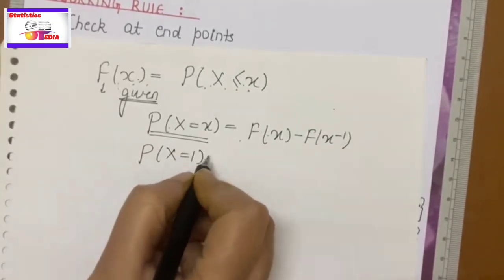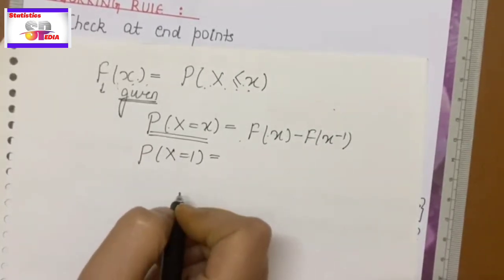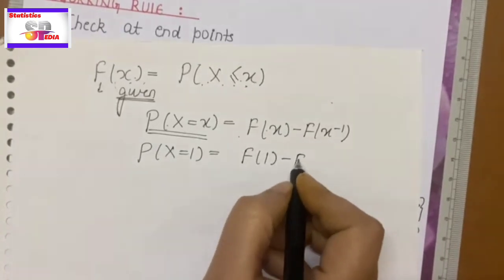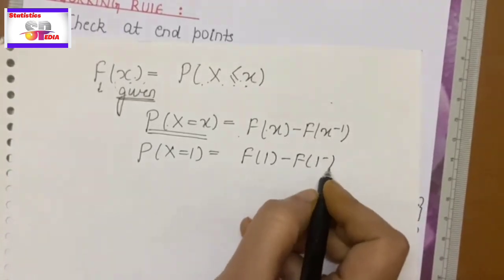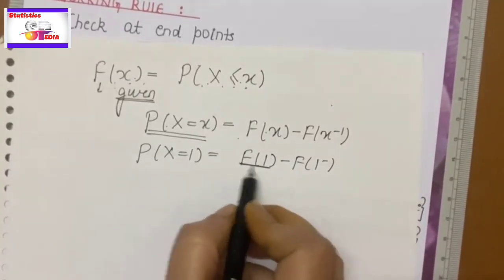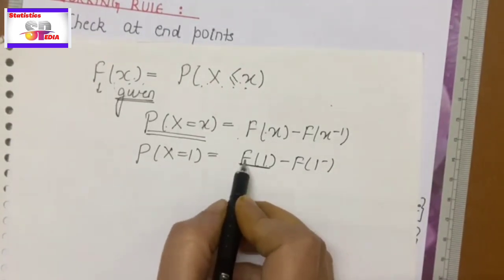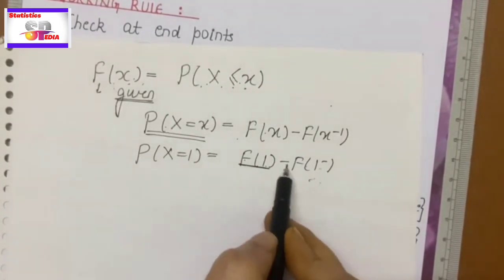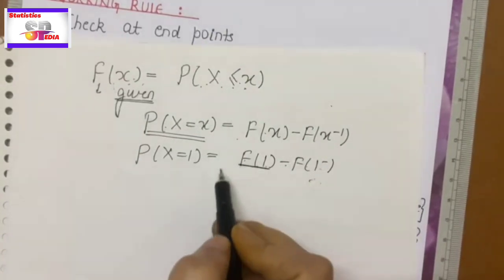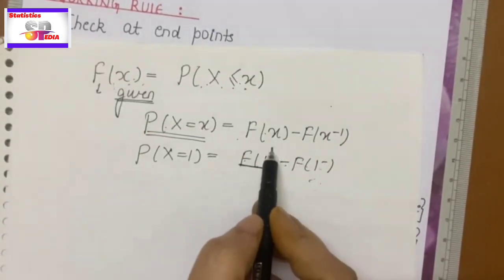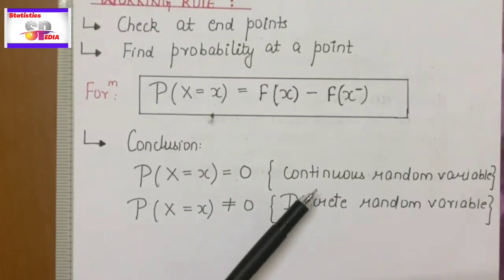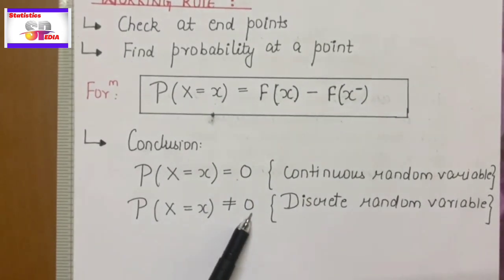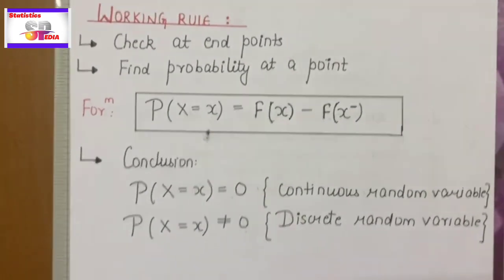For example, suppose I have to get the probability at point 1. So F(1) minus F(1 minus). F(1) means when x equals 1, and F(1 minus) means less than 1 — just before 1, what is the CDF value — we put that in. Then: if the result equals 0, the random variable is continuous, and if it is not equal to 0, then it is discrete.